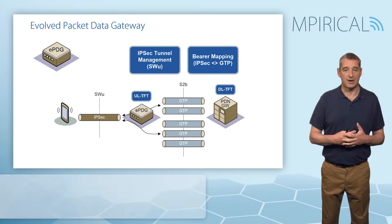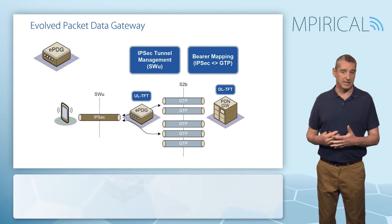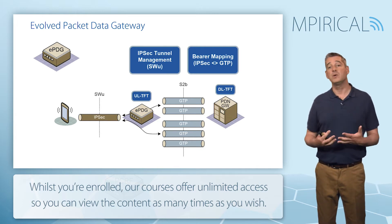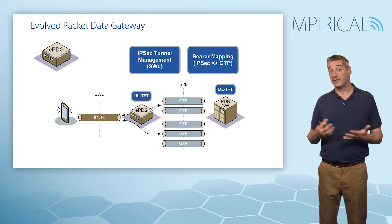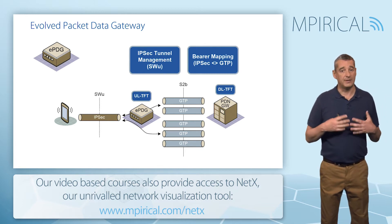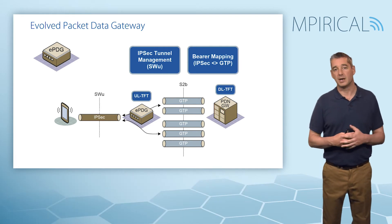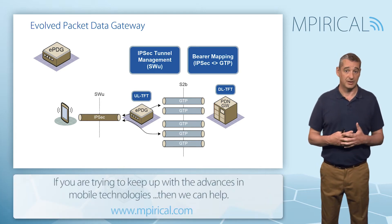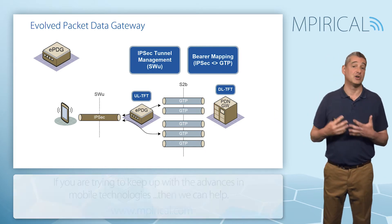Across the SWU interface we have our IPSec tunnel carrying our user plane traffic. However, across the S2B interface there may exist a number of GTP tunnels supporting different EPS bearers. We require different EPS bearers to support different qualities of service — internet traffic, Wi-Fi calling traffic, the voice itself, or IMS signaling. Therefore it becomes the job of the ePDG to map traffic coming down these various GTP tunnels onto the IPSec pipe. For uplink traffic, we also need an uplink traffic flow template — a set of rules telling the ePDG which traffic needs to be sent down which GTP tunnel.